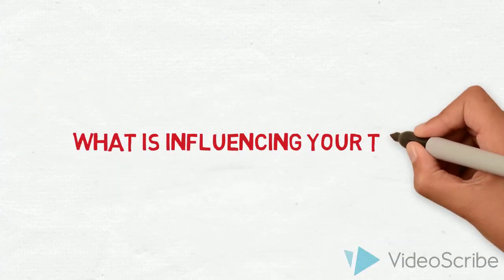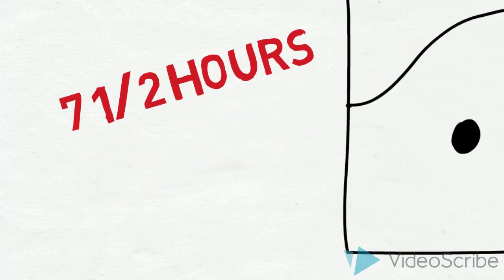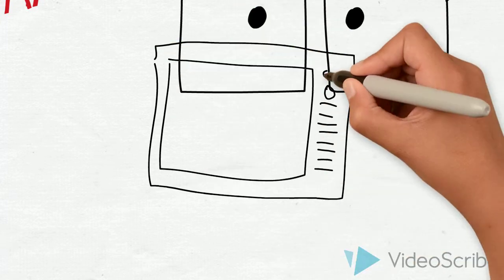What is influencing your teens? Teens ages 13-17 are looking at a screen 7.5 hours a day. This includes computers, phones, tablets, TVs, etc.